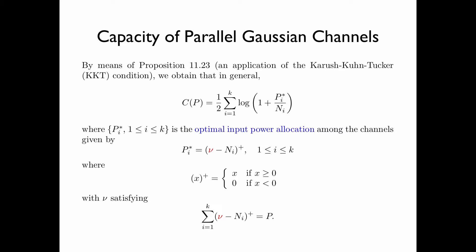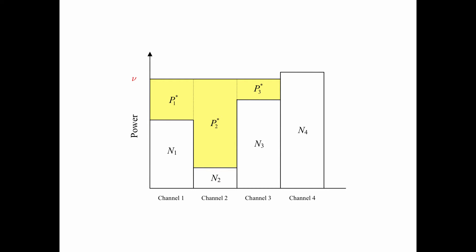Note that for each i: if nu is greater than ni then pi star equals nu minus ni; if nu is less than ni, then pi star equals 0. The set of optimal input power allocations continues to have a water-filling interpretation. In this example we have four channels 1, 2, 3, and 4, with noise powers n1, n2, n3, and n4. Here the water level nu is lower than n4, so p4 star equals 0. In other words, when the noise level of a channel is too high, we do not allocate any power to that channel.